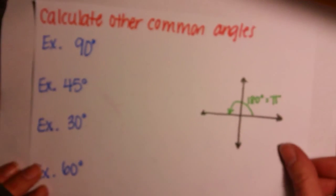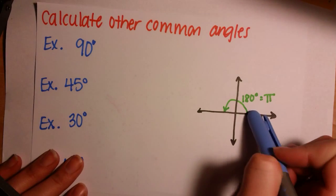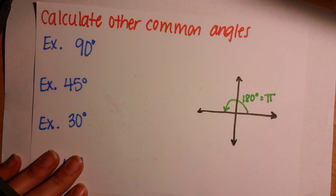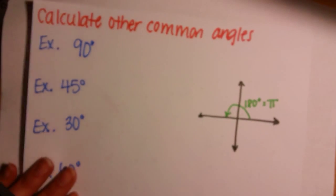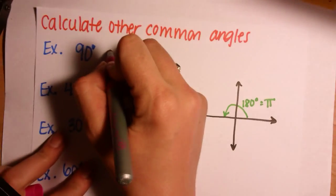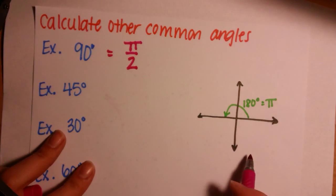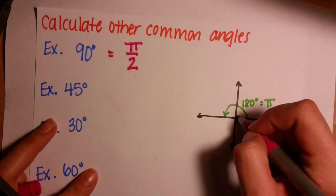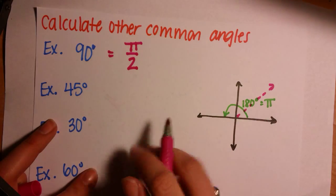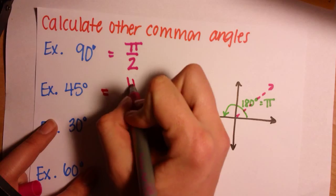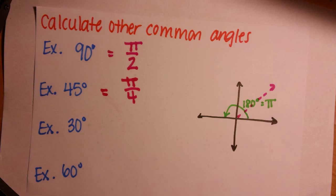Let's calculate some other common angles. For example, we'll have 90 degrees. We know that 180 degrees is π, so for 90 degrees, you're only going half that, so we'll have π/2. Now, 45 degrees is up here, which is half of 90, so you'll get π/4. And I'll leave the last two for you to try on your own.